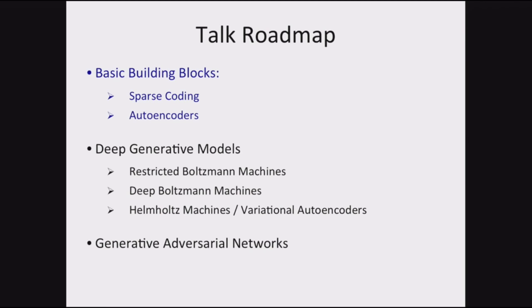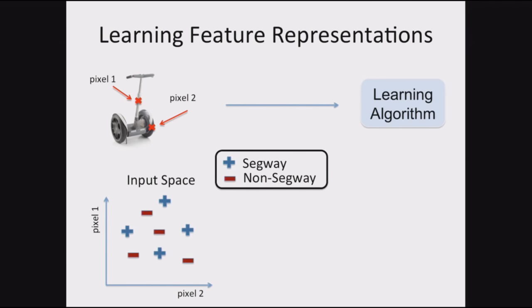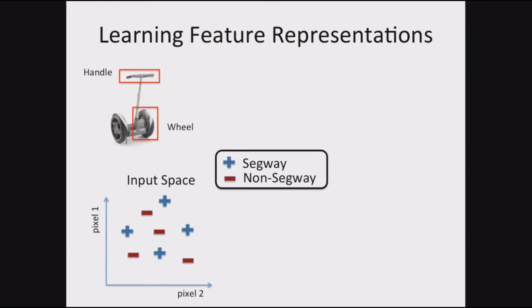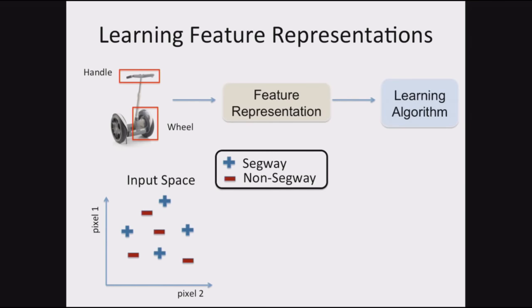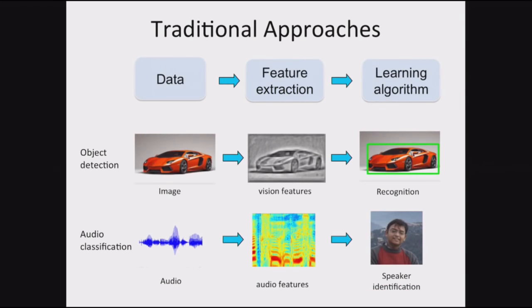Before jumping in, let me give a little motivation. If I'm trying to classify a particular image and I'm looking at specific pixel representations, it might be difficult to classify what I'm seeing. On the other hand, if I can find the right representations, the right features or structure from the data, then it might be easier to understand what's going on. So how do I find these representations? One traditional approach is: you have data, you create features, and then you run your learning algorithm.